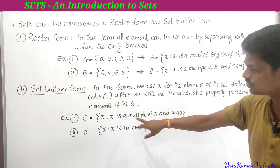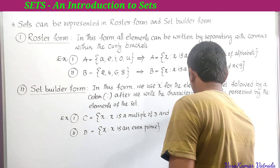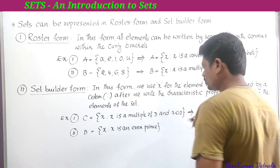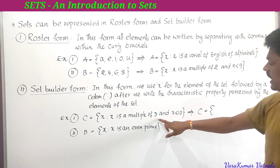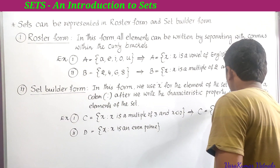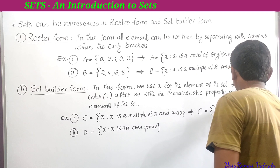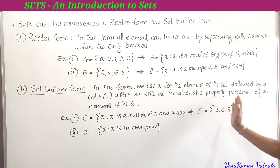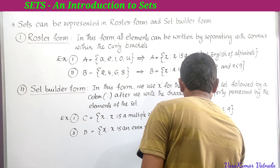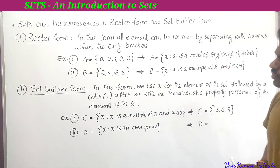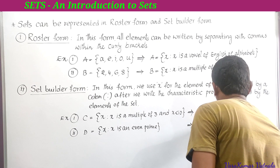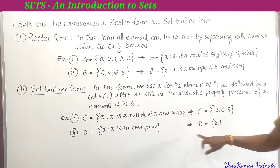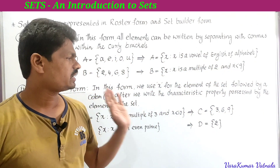Now converting from set builder form to roster form. For C = {x : x is a multiple of 3 and x < 10}, we write all multiples of 3 less than 10: 3, 6, 9. So C = {3, 6, 9}. For D = {x : x is an even prime}, there is one and only one even prime — that is 2. So D = {2}.